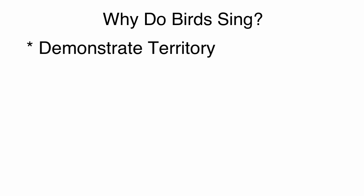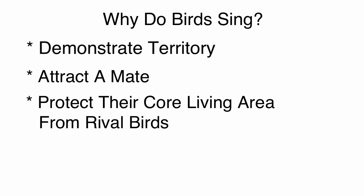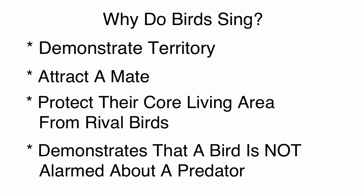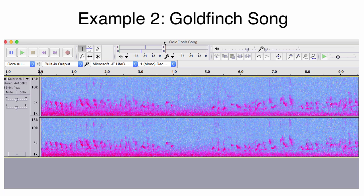Bird songs are used to demonstrate territory, attract a mate, and protect the space where they gather food and make their nests from rival birds. It's also a good indicator for bird language that a bird is not alarmed about a predator, because birds do not sing when their life is in immediate danger. Let's play another example — a goldfinch song. It's a little bit more melodious and less trilling and scattered, but it still has all the classic indicators of bird song: a long, drawn-out, repetitive mishmash of sound and pitch.